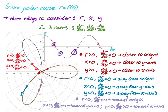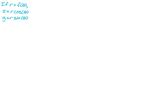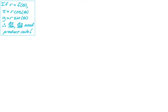Let's take a look at an actual problem. If we have R equals F of theta, two things to remember: X equals R cosine θ and Y equals R sine θ. Since X equals R times cosine θ, and R equals F of θ, then X is really F(θ) cosine θ. So to find dX/dθ, we have a product of functions and we'll need the product rule — and that's true for Y as well.